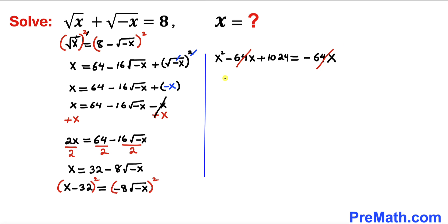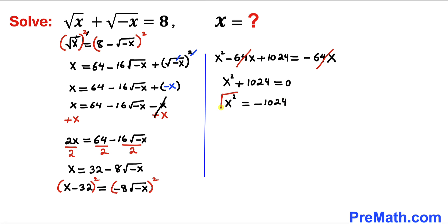So therefore we are going to get x squared plus 1024 equals to zero. Let's go ahead and move this 1024 to the right hand side. So therefore we are going to have x squared equals to negative 1024. Now let's go ahead and undo this square by taking the square root on both sides.